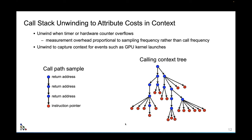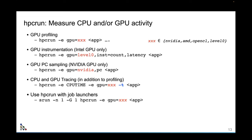When we launch GPU kernels, we also unwind the call path so we know exactly where the GPU kernel was launched. To use HPC Run, you just launch your application with it. To profile a GPU application, you say 'hpcrun -e gpu=XXX', where that can be NVIDIA, AMD, OpenCL, or level zero — level zero is Intel's infrastructure. To profile a Kokkos application on Perlmutter, you'd just say 'gpu=nvidia' and then launch your application. If you want PC sampling, you say 'gpu=nvidia,pc'.